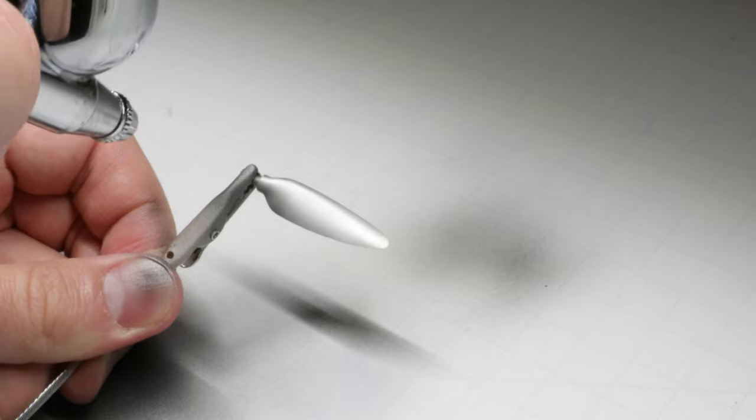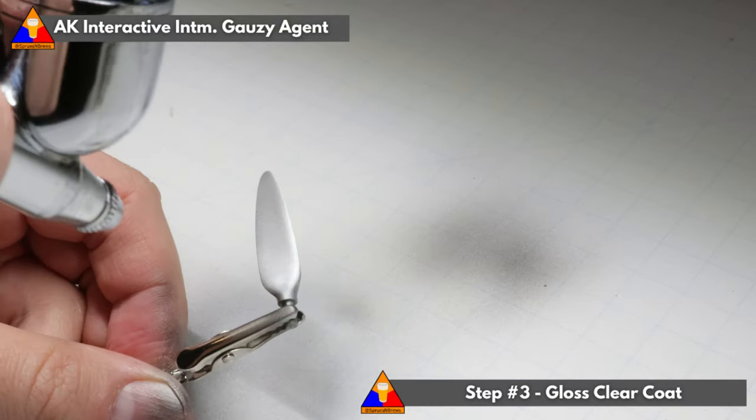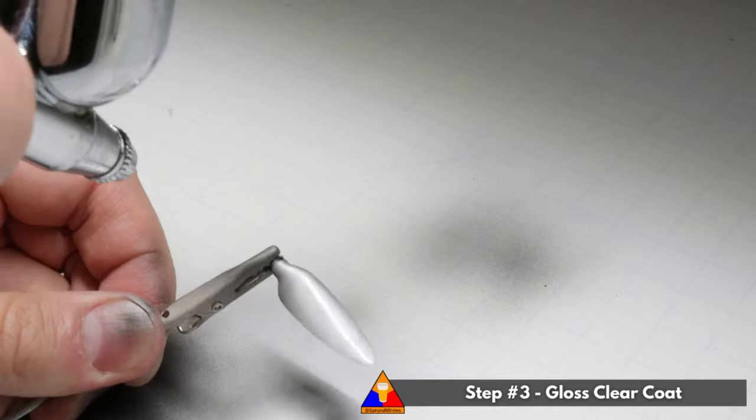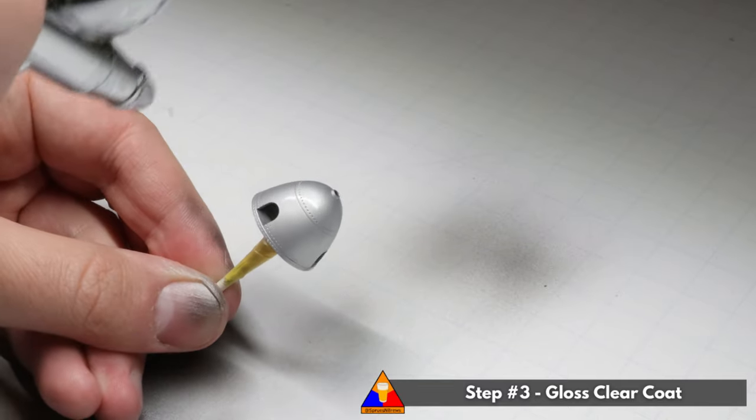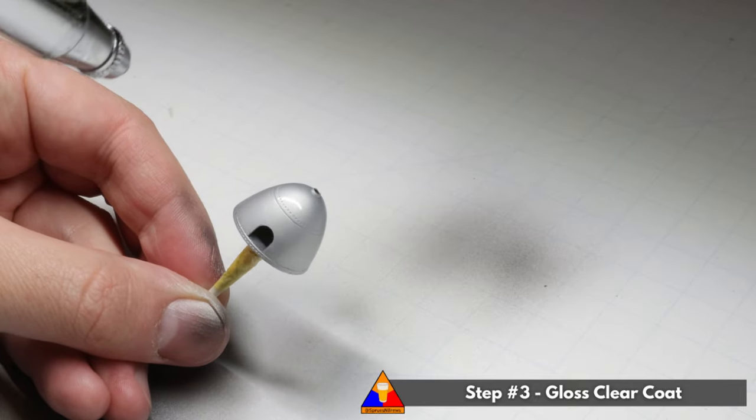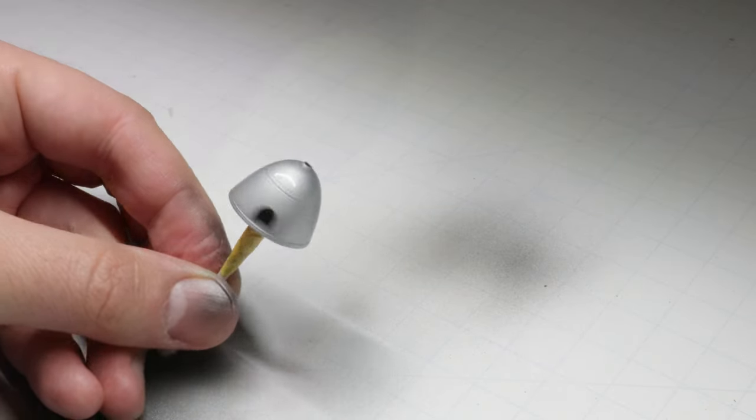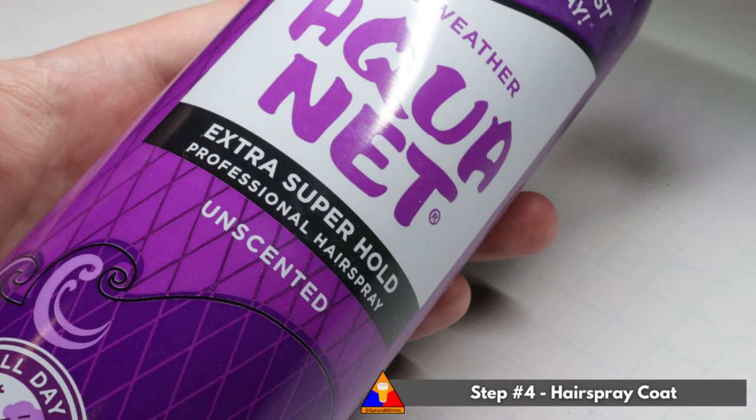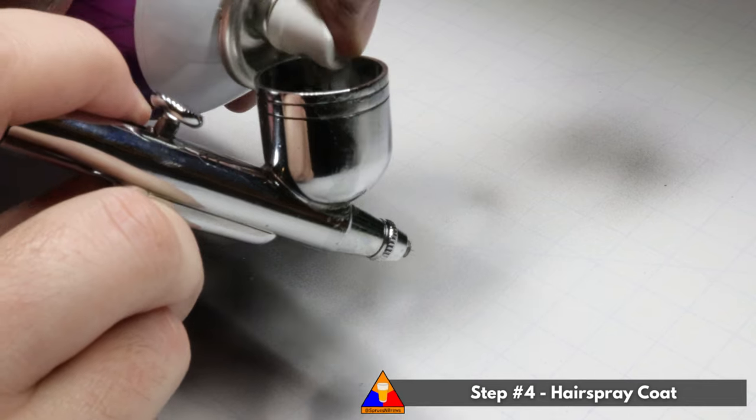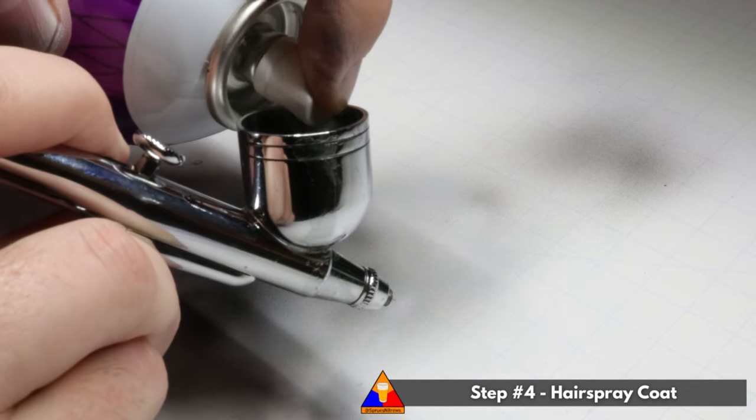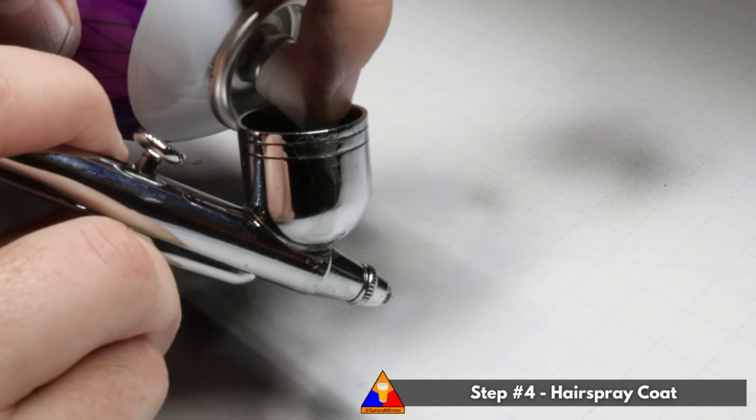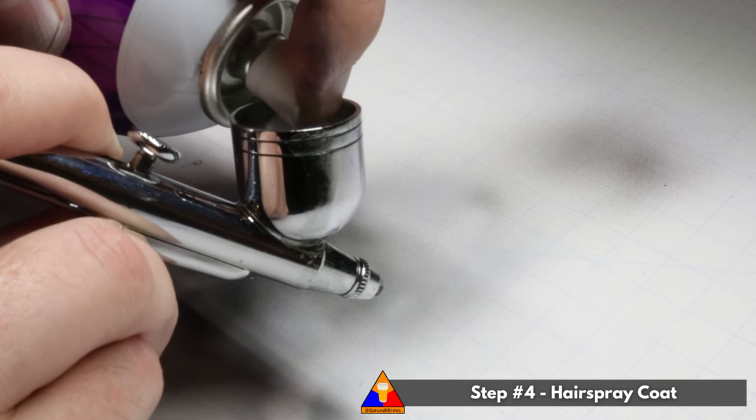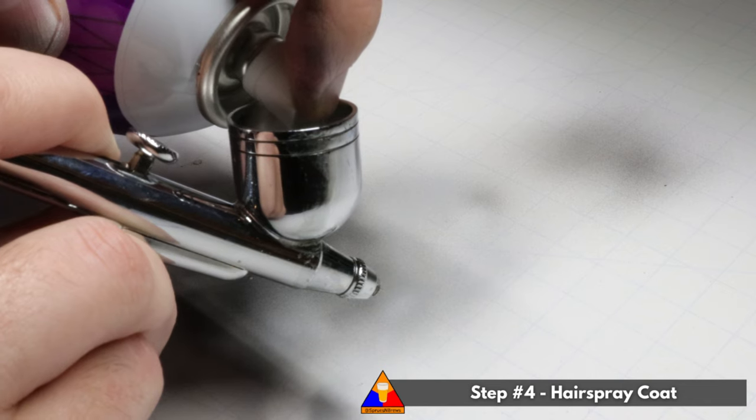Once the aluminum is applied, we're going to spray a clear coat of gloss varnish to seal in and protect our first paint layers. And now is where things start to get interesting. We're going to airbrush on a layer of hairspray. That's right, regular old hairspray. This is going to act as a chipping fluid and is the secret to achieving genuine, natural looking chipping and wear layers with your paint. All we've got to do is very gently spray a bit of the hairspray into our airbrush, and spray it on just as you would any other clear coat.